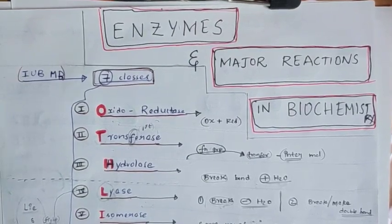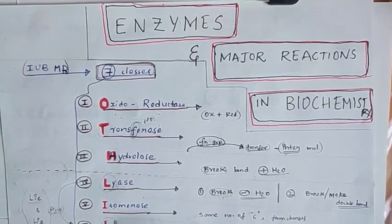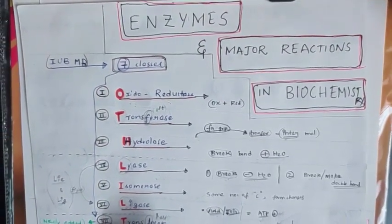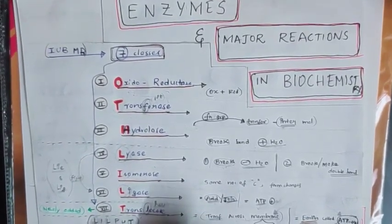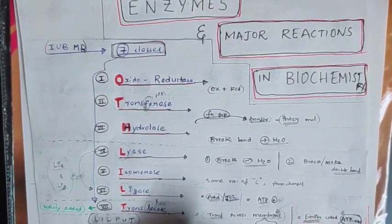Hello guys, let us start with biochemistry. Today's topic is enzymes and major reactions in biochemistry. Major reactions in metabolisms: in carbohydrate metabolism like glycolysis, Krebs cycle, HMP pathway; in lipid metabolism like ketogenesis, cholesterol.